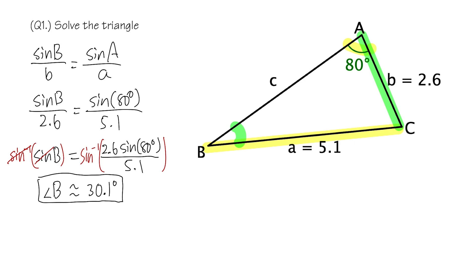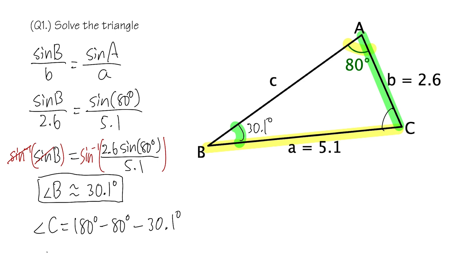With angle B = 30.1°, angle C is straightforward: angle C = 180° − 80° − 30.1° = 69.9°.